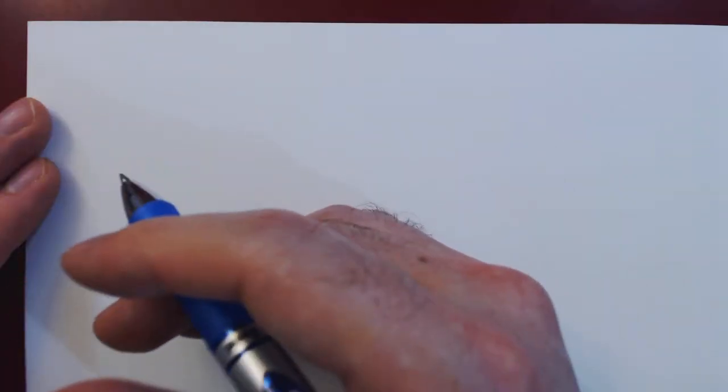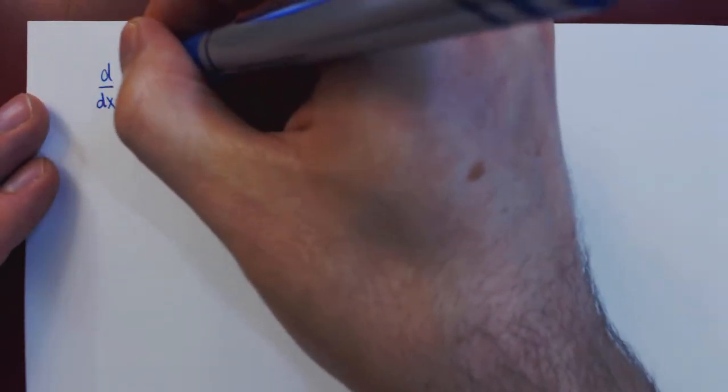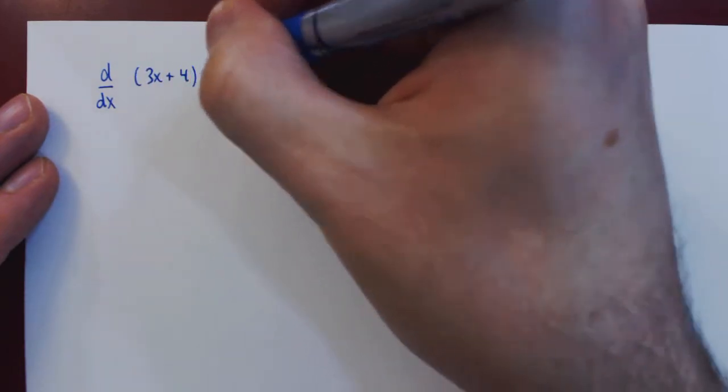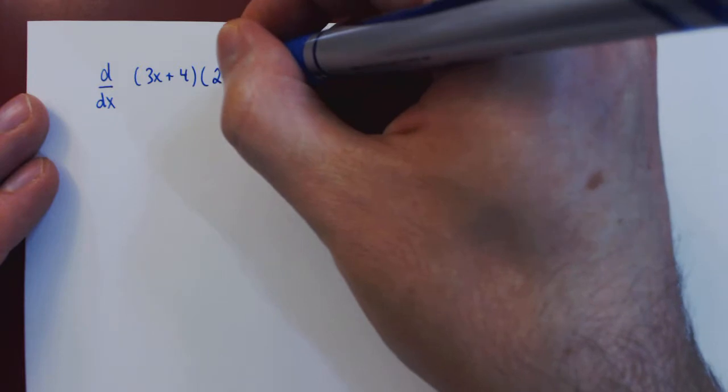Okay, so in this video we will give an example of the product rule of differentiation. We will give two solutions: the first without using the product rule and the second with the product rule. Of course we will see that in both cases we obtain the same answer. So what if we want the derivative with respect to x of the product between the function 3x plus 4 and the function 2x minus 9.